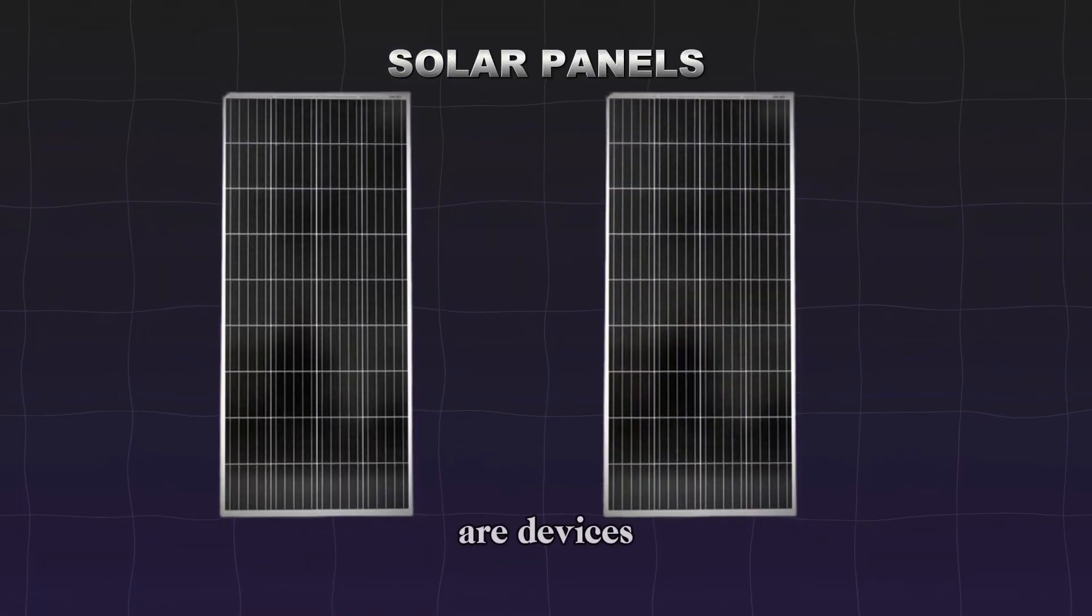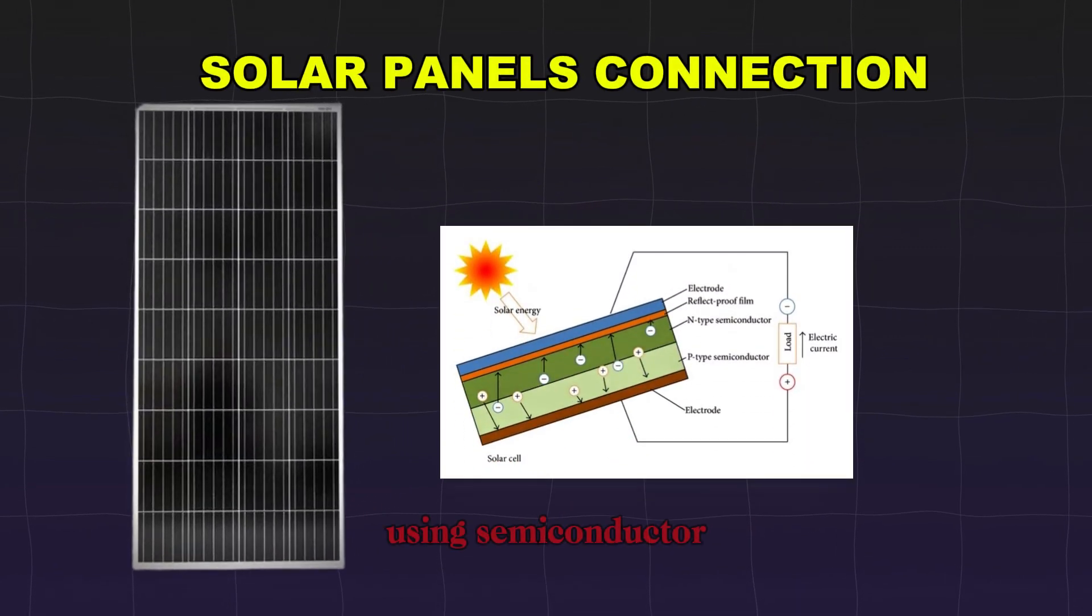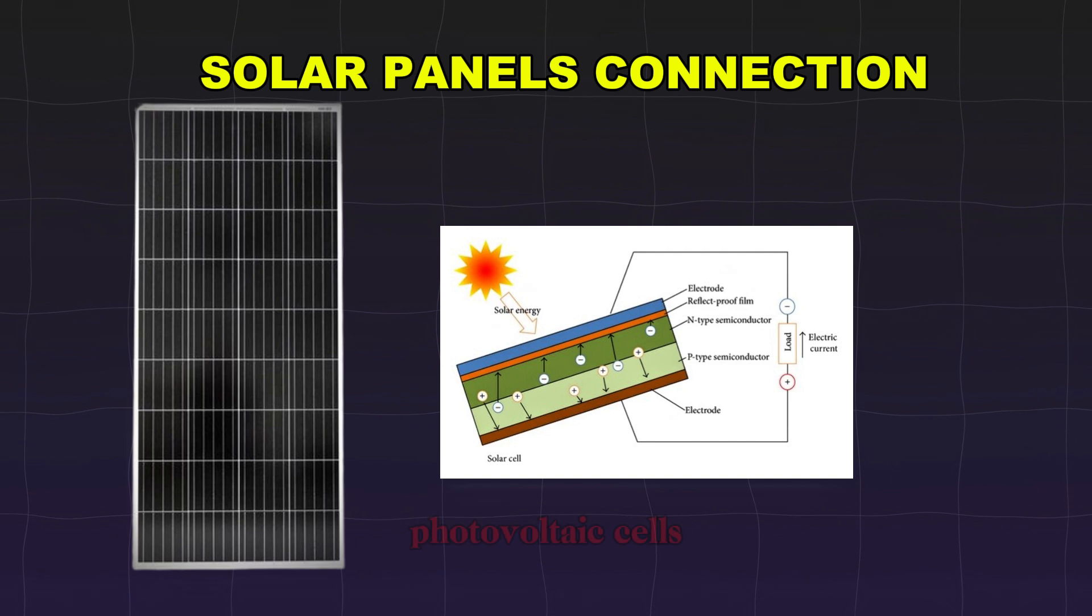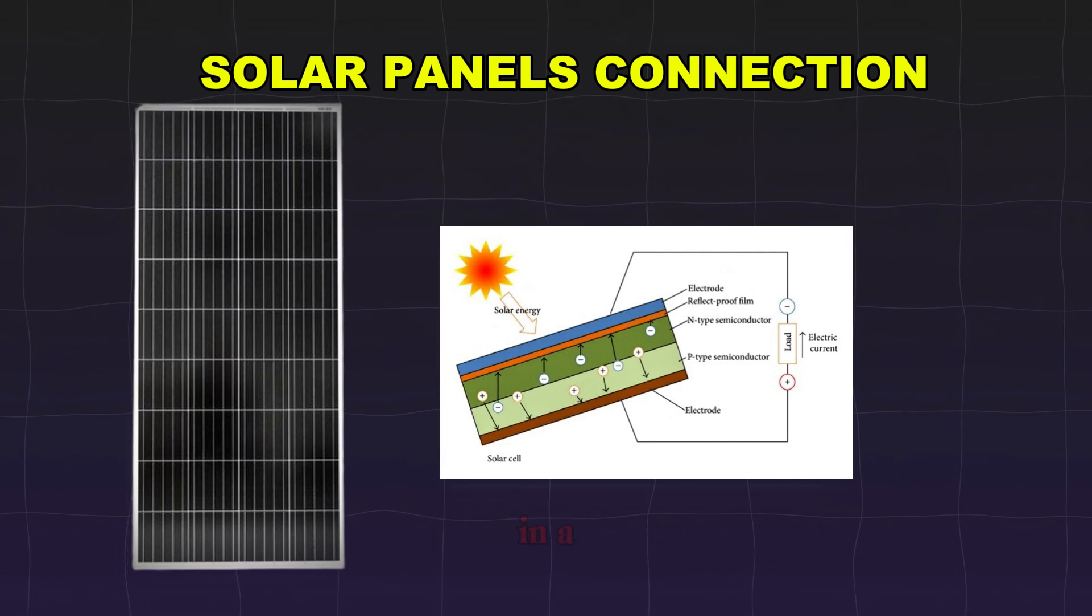Solar panels are devices that convert sunlight into electricity through the photovoltaic effect, using semiconductor materials like silicon. They consist of multiple photovoltaic cells connected together, typically encased in a durable frame.